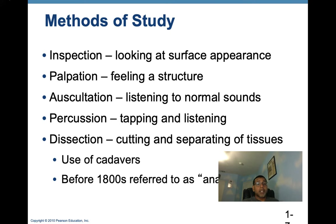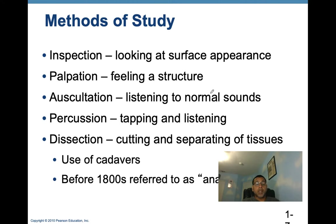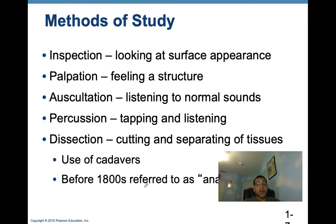Some other methods of study include inspection — looking at the patient's body surface appearances from head to toe, noting any findings. Palpation — using our hands to feel a structure. Auscultation — listening to normal sounds throughout the body such as heart sounds and lung sounds. Percussion — tapping and listening: does it sound hollow, or does it sound like there's fluid where it should be hollow? And dissection — cutting and separating of tissues using cadavers. Before the 1800s this was referred to as anatomizing.